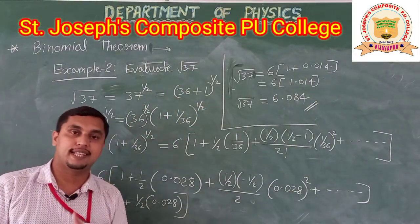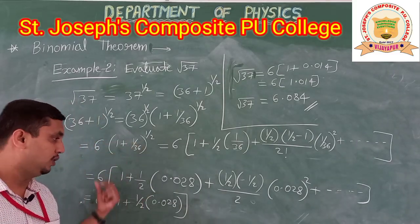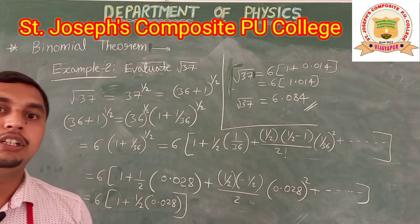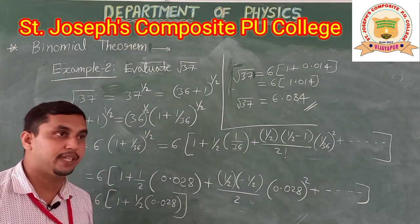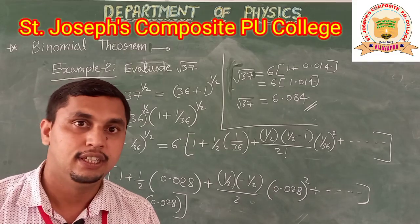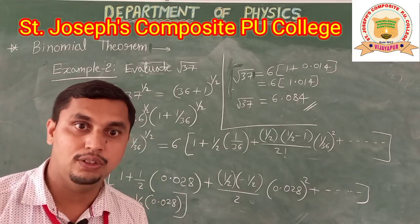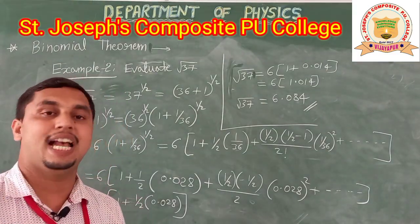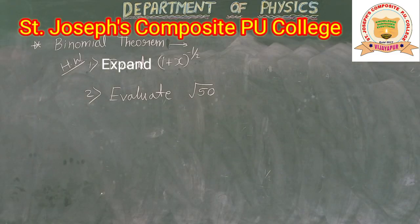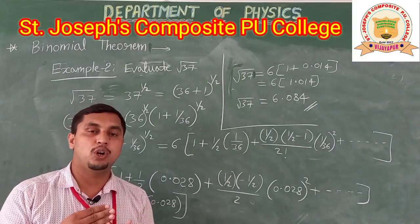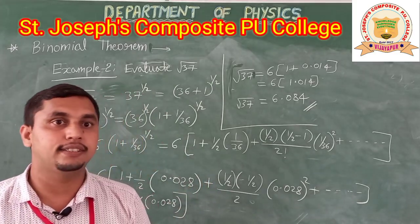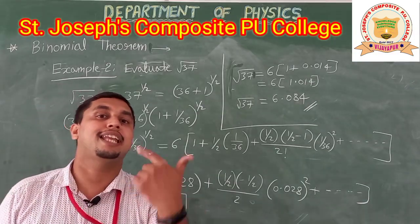These are two different examples. We use these in physics, particularly in competitive exams, and as I mentioned, in the gravitation chapter we have to use binomial expansion. I hope it is clear. Let us solve one or two more examples as practice. In the next class, we will discuss another topic under basic mathematics for physics, and we will continue in the next video classes.